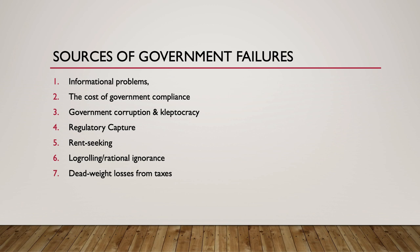The seventh source is deadweight loss from taxes. Government spending must be financed in some manner, typically through taxation. It is well known by economists that taxes distort costs and benefits and therefore influence economic choices. This comes down to the incentive principle, which in a basic sense means that you'll get more of what you subsidize and less of what you tax. When governments tax goods for which there are no negative externalities — often activities we would like to see more of in society — the government generates deadweight losses, underconsumption, and higher prices.